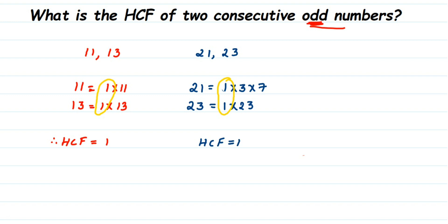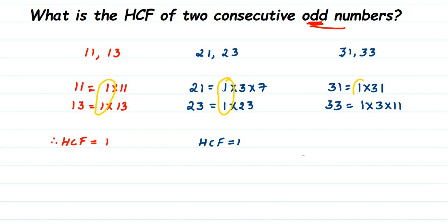Let me take another example: 31 and 33. 31 is a prime number so 31 = 1 × 31. And 33 is an odd composite number, so 33 = 1 × 3 × 11. Again, we have only one common factor which is 1. So the HCF of 31 and 33 is again 1.